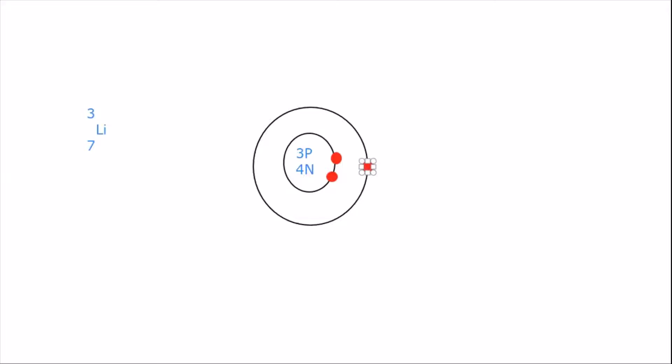If we go back to the periodic table, we see that lithium is in group one, which means that it has one valence electron. And when we match that up to our diagram for lithium, we see it also has one valence electron. So we know we are correct.